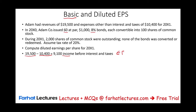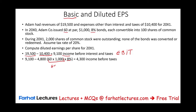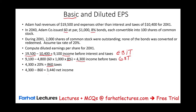Then we deduct interest. We have 60 bonds times $1,000 times 8%, giving interest expense of $4,800 — that's $60,000 of bonds at 8%. So $9,100 minus $4,800 gives us income before taxes of $4,300. Then taxes: $4,300 times 20% equals $860 in taxes. Income before taxes minus taxes gives us net income of $3,440.